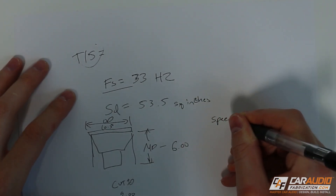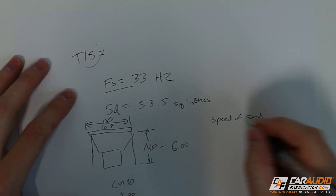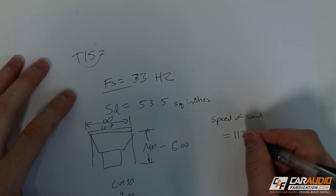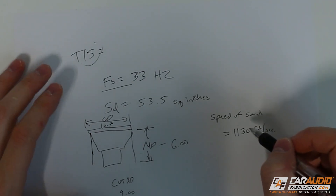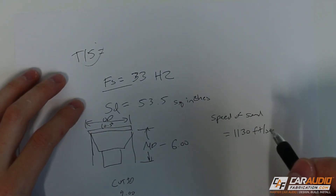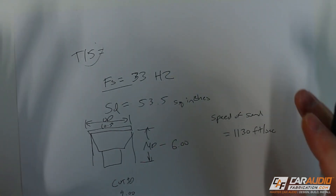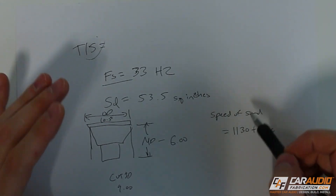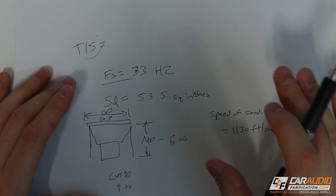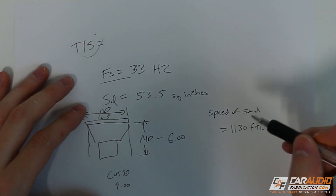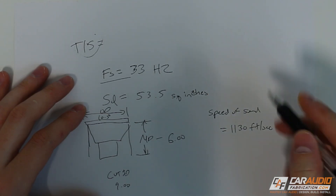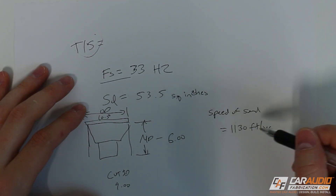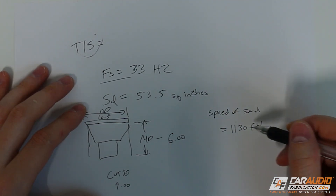Next, we need to know the speed of sound. Here in the United States, that's approximately 1130 feet per second. Depending on your altitude and where you are in the world, this value can change slightly and affect the tuning of your enclosure, but not enough to have any major impact on performance. If you're using metric, just use meters per second and the result will be in meters rather than feet.